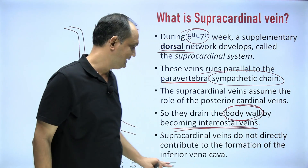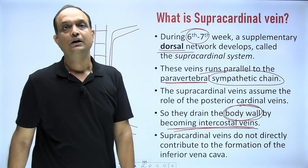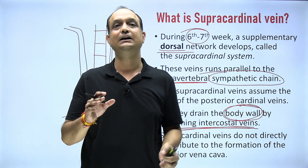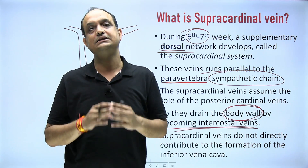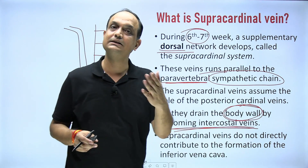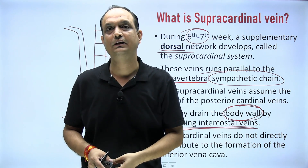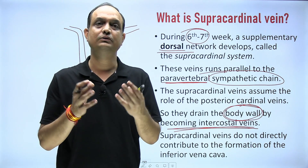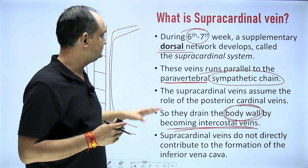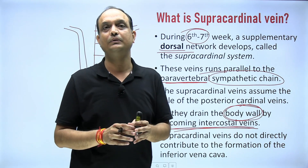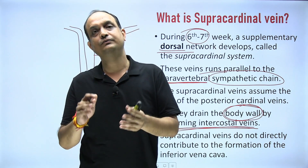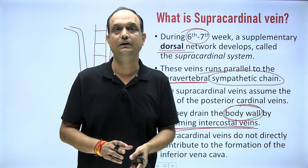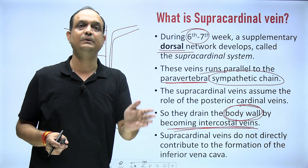The supra cardinal vein does not directly contribute to the formation of inferior vena cava. In adult life, body walls are drained by the azygous system of veins — intercostal veins drain into the azygous system, which drains into the superior vena cava. The inferior vena cava drains the lower limb, gonads, and kidneys before entering the liver. The sub cardinal veins are the main source of formation of inferior vena cava.